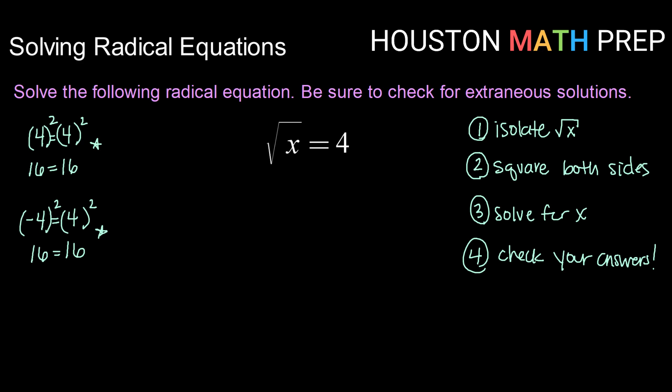Alright, let's start with a basic one. Square root of x equals 4. So running through our steps isolate the square root or the radical.